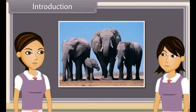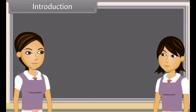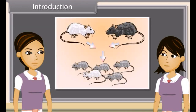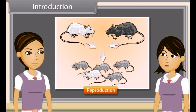We know that reproduction is the ability of all organisms to produce young ones similar to themselves in most characters. We can also say the process by which a species is continued is called reproduction.